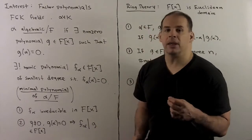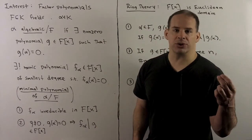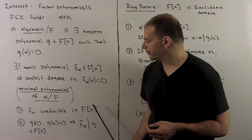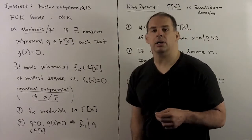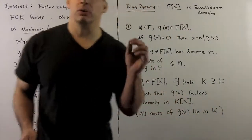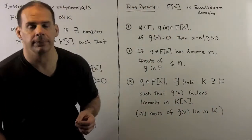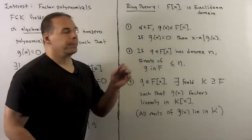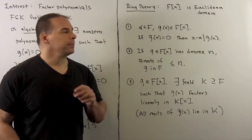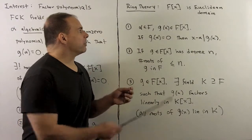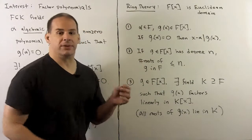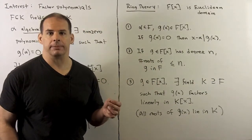Now that puts the focus on factoring irreducibles. Let's recall some results from ring theory. We have the polynomial ring over f, where f is a field, is a Euclidean domain.